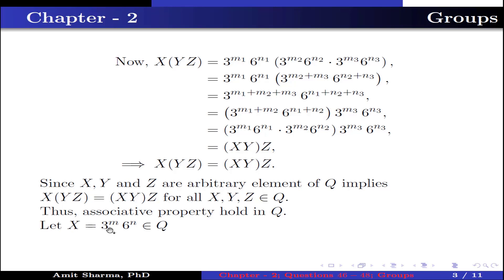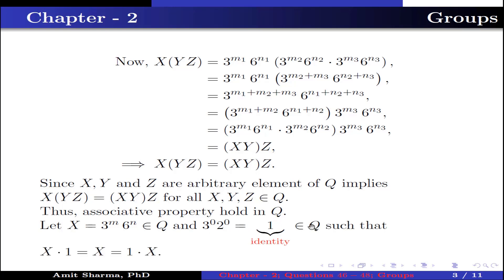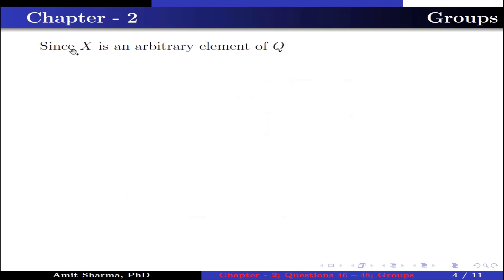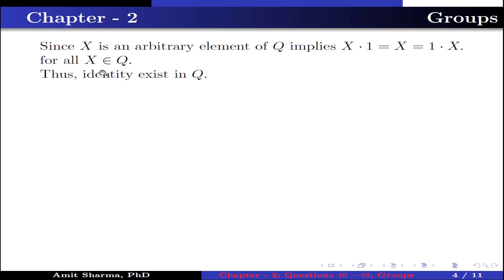Let x = 3^m · 6^n belong to Q. Then 3^0 · 6^0 = 1 belongs to Q such that x·1 = x = 1·x, and 1 is the identity. Since x is an arbitrary element of Q, x·1 = x = 1·x for all x in Q. Thus identity exists in Q.